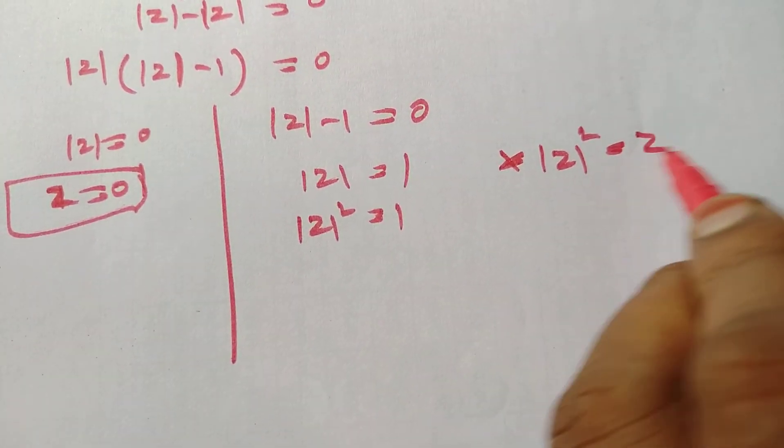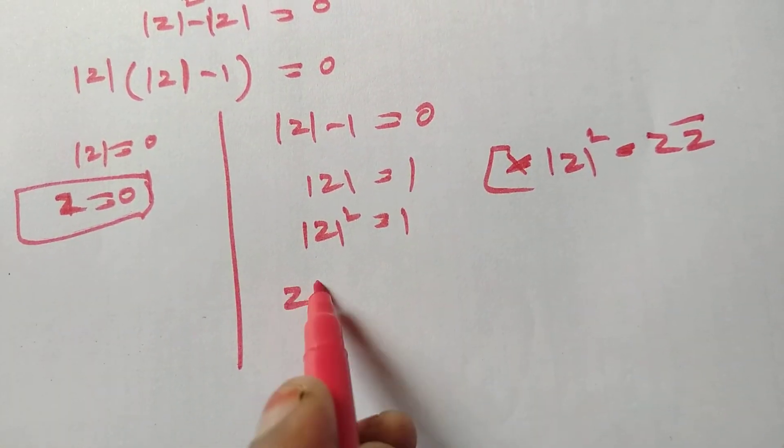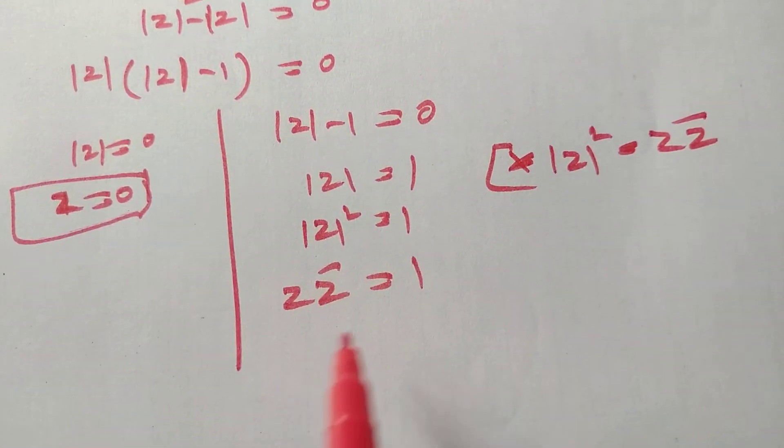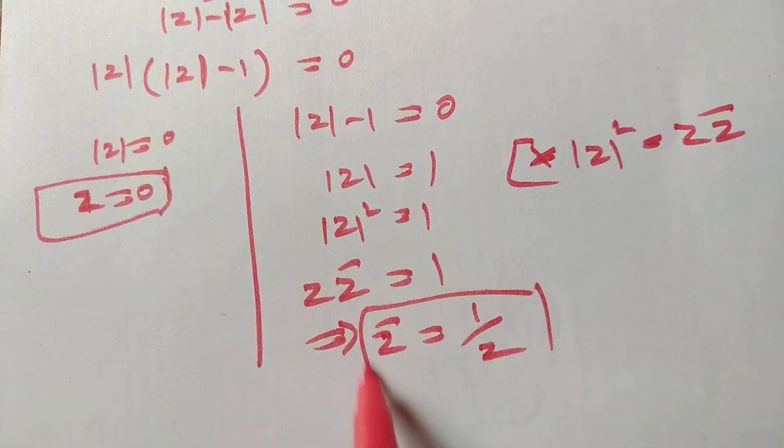So modulus of z squared equal to z into z bar. So z into z bar equal to 1, then z bar equal to 1 by z.